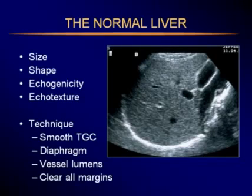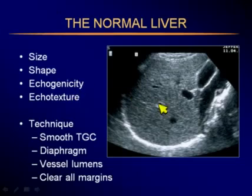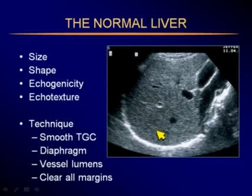When we look at the normal liver sonographically, we pay attention to the size, shape, echogenicity, and ecotexture. Echogenicity and ecotexture are two different things. Echogenicity has to do with the level of brightness of the liver parenchyma, and we use portal vein walls to compare that. Texture has more to do with the homogeneity of the liver.